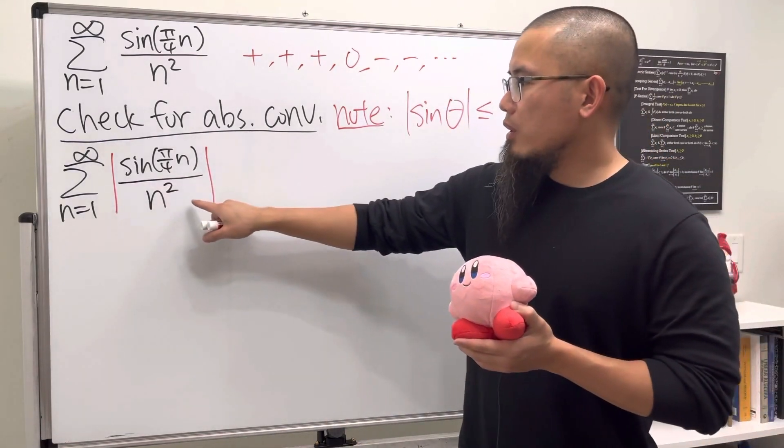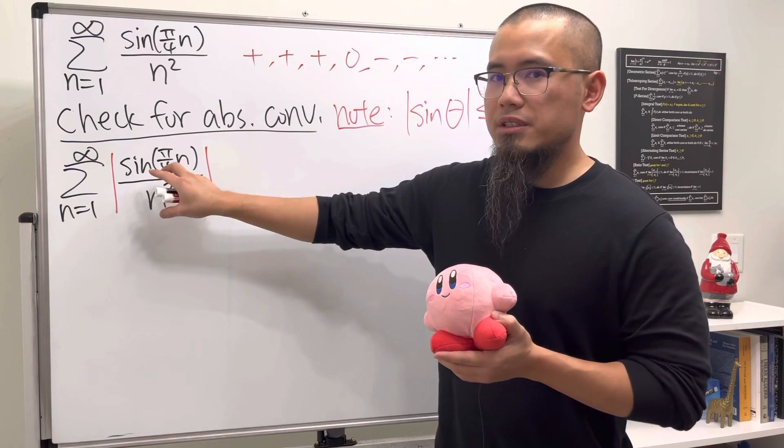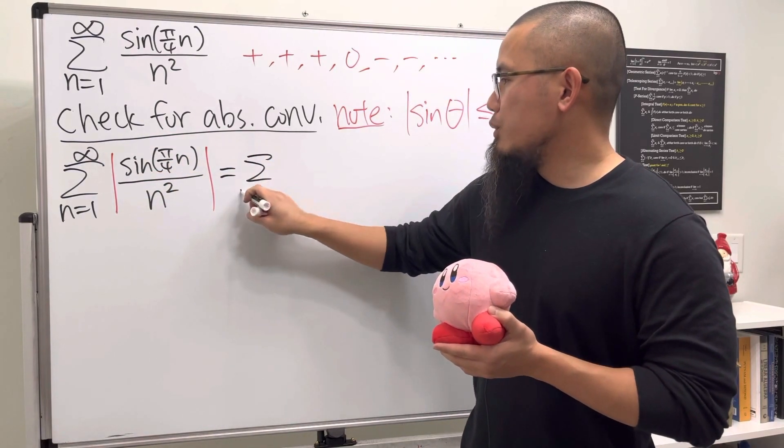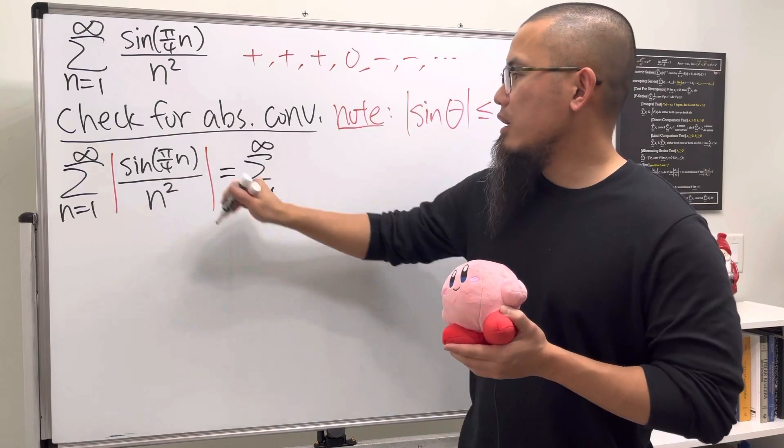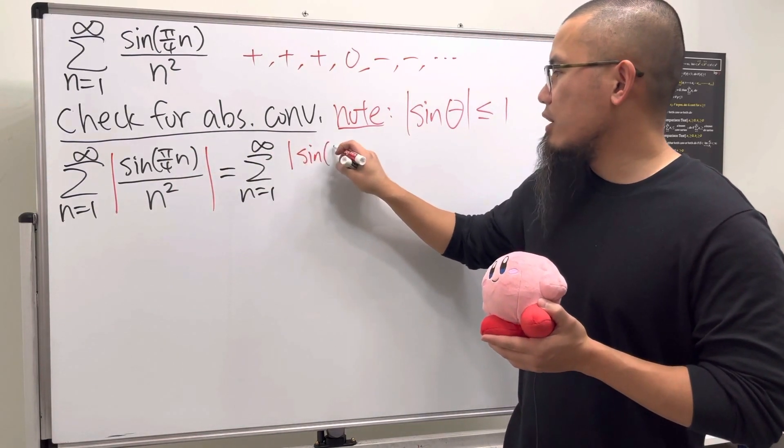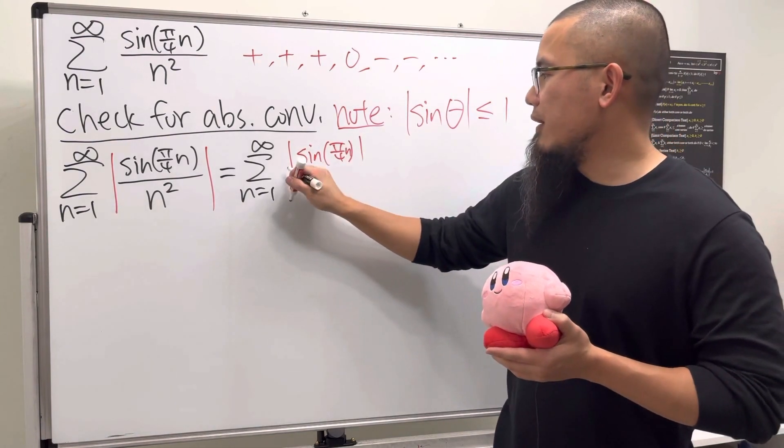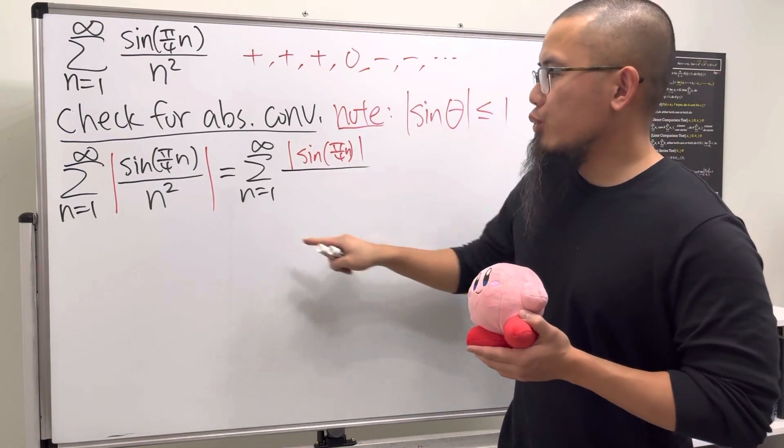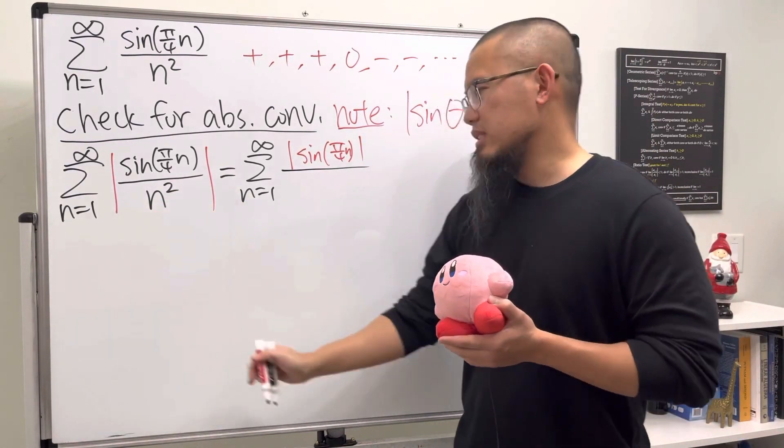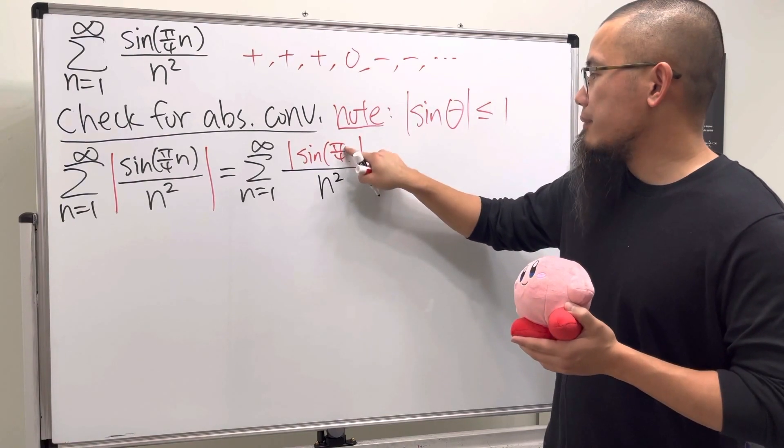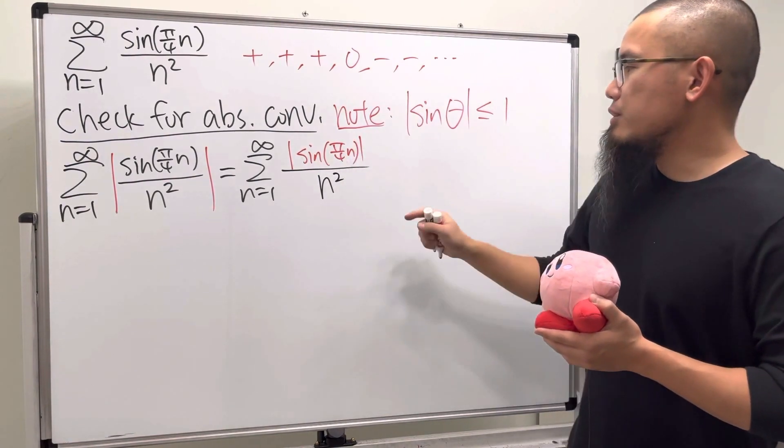The absolute value of a quotient is the quotient of the absolute value. This is the same as the series as n goes from 1 to infinity: absolute value of sine of π/4n divided by absolute value of n squared, but that's always positive so we can just put n squared.